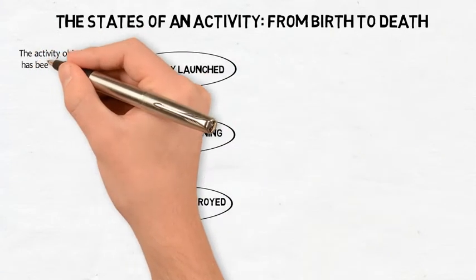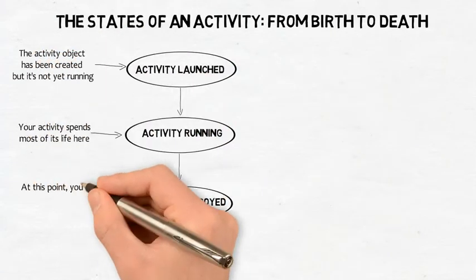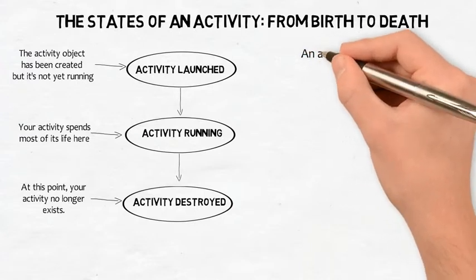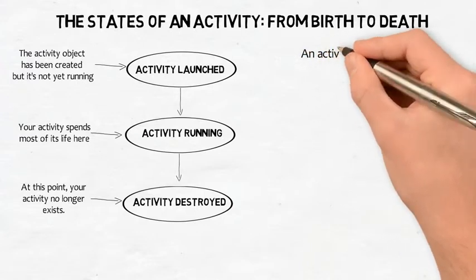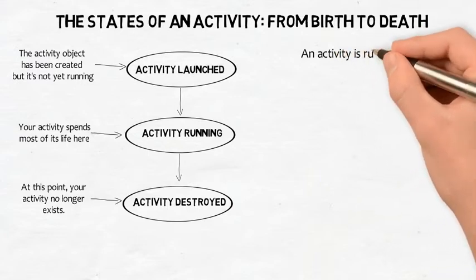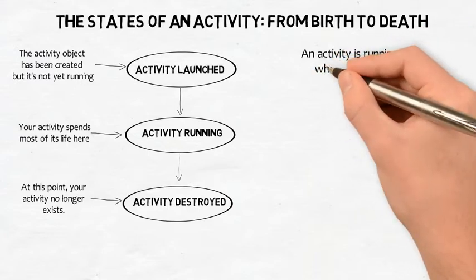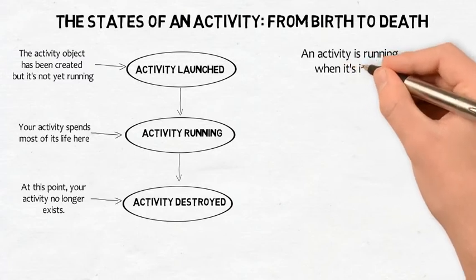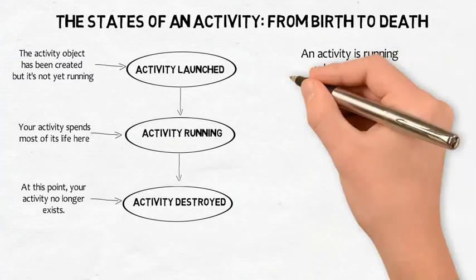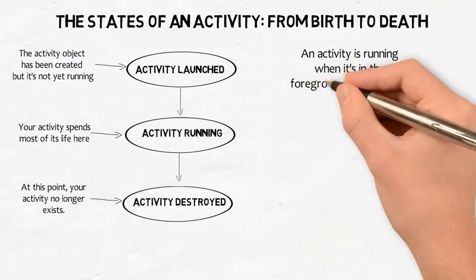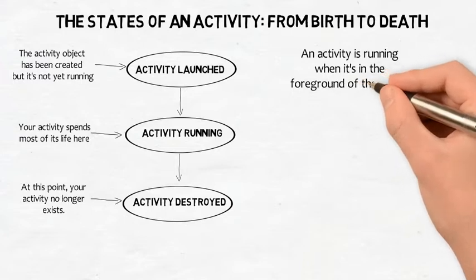When Android creates and destroys an activity, the activity moves from being launched to running to being destroyed. The main state of an activity is when it's running or active. An activity is running when it's in the foreground of the screen, has the focus, and the user can interact with it. The activity spends most of its life in this state.